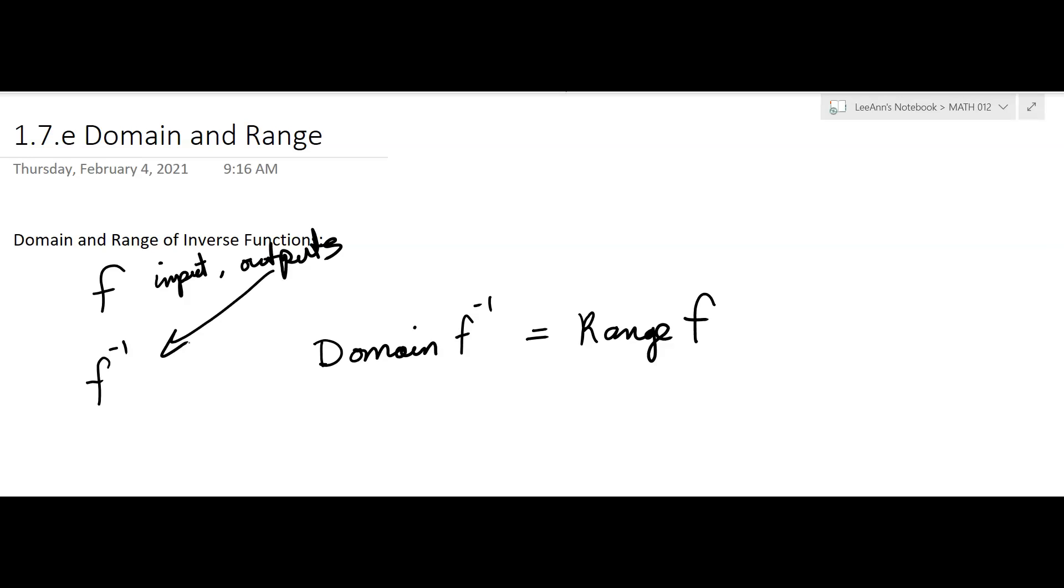So the domain, those are the inputs, and the range are switching places. So the domain of the inverse is the same as the range of the original function.